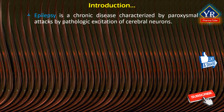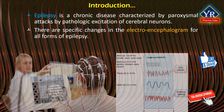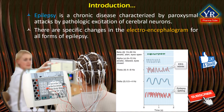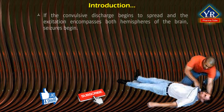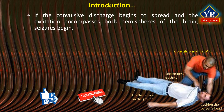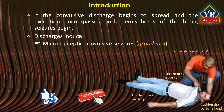Epilepsy is a chronic disease characterized by paroxysmal attacks caused by pathologic excitation of cerebral neurons, accompanied by various degrees of disturbance of consciousness. There are both convulsive and non-convulsive forms of epileptic attacks, each characterized by distinctive clinical features, and there are specific changes in the electroencephalogram for practically all forms of epilepsy. Seizures are generated in the epileptogenic center of the brain. Discharges that spread across both hemispheres cause grand mal seizures; minor attacks are known as petit mal.